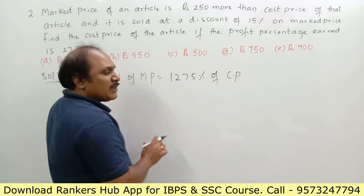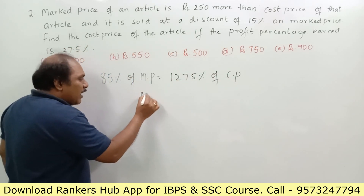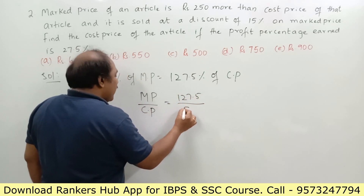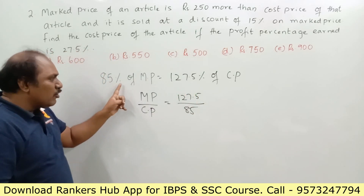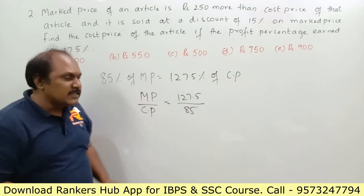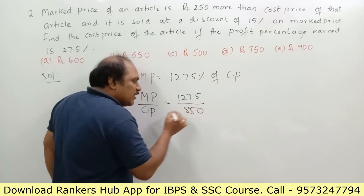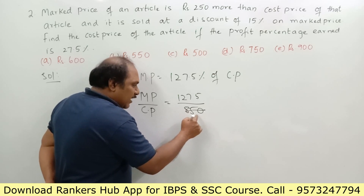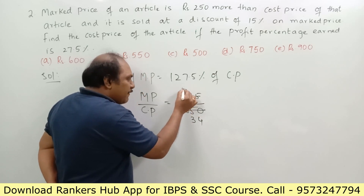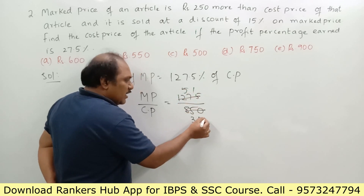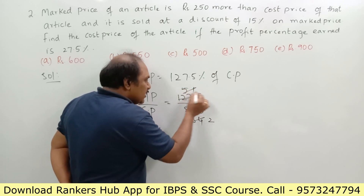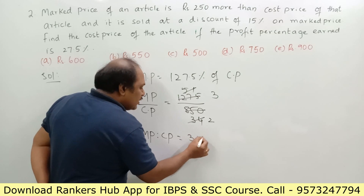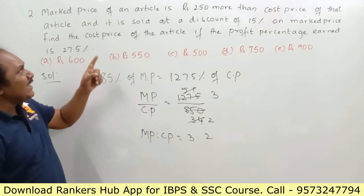Now I am going to find the ratio of marked price to cost price. Marked price divided by cost price equals 127.5 divided by 85. Removing the decimal and dividing through by 25 gives us 17 to 34 — simplifying, the marked price and cost price are in the ratio 3 is to 2.